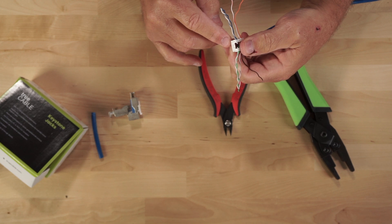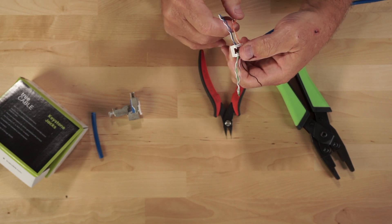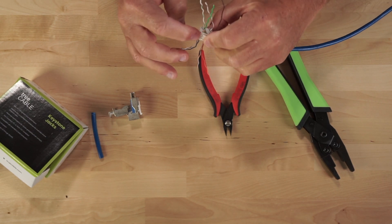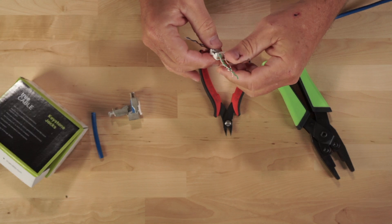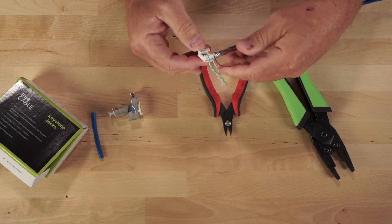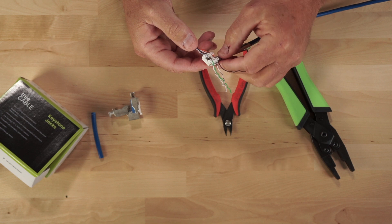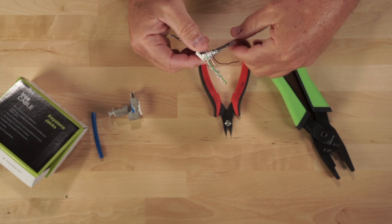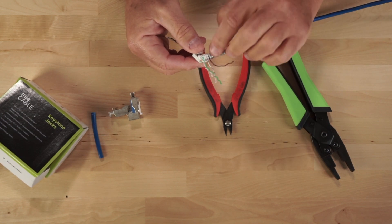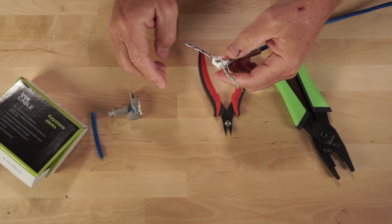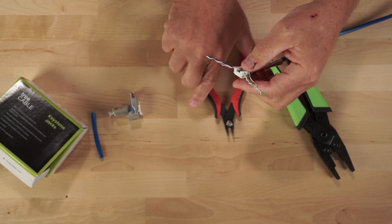So we do white orange, orange, white green, green, and white blue, blue, white brown, brown. So we're good to go. All right, so we have our cables in place on the plastic connector. We have our shield wrapped down. We have our drip wire wrapped around the top of the shield and the jacket.